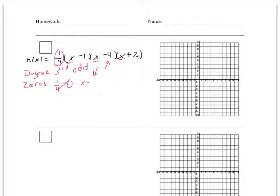I set x minus 1 equal to zero, and I would add 1, so 1 is a zero. X minus 4 gives me x equals 4, and x plus 2 gives me x equals negative 2.